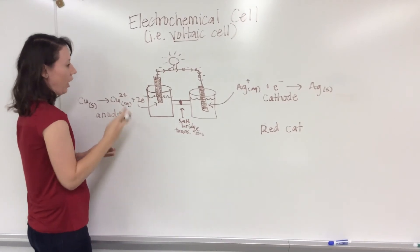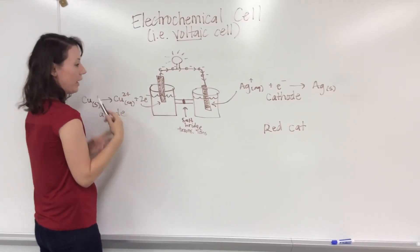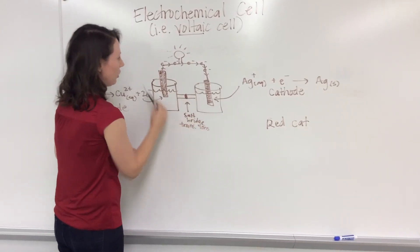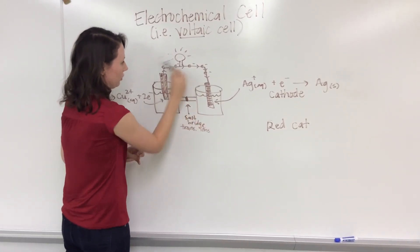My electrons are always going to flow in a particular direction. They're going to flow from where they are generated to where they are consumed. There is only one direction that electrons are flowing.